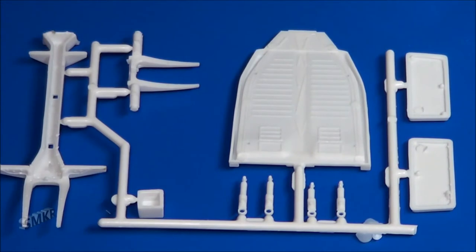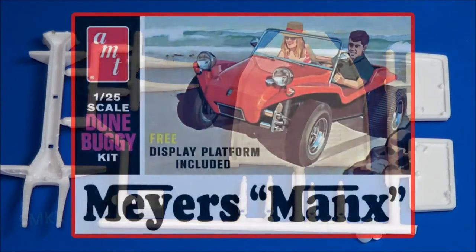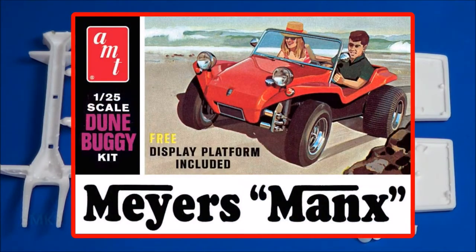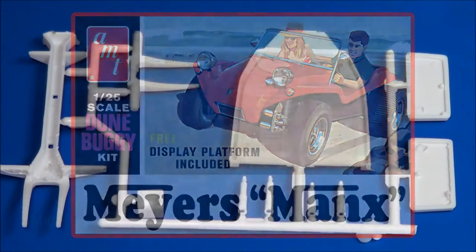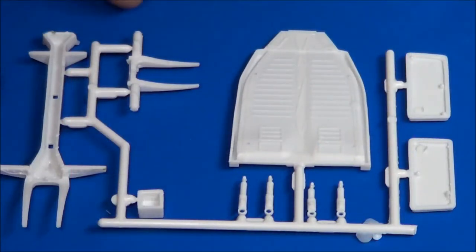Here's part of the lower pan or chassis, which is the same chassis that's found in the Meyers Manx AMT release, or the dune buggy. So we have the typical Volkswagen pan and the tunnel.